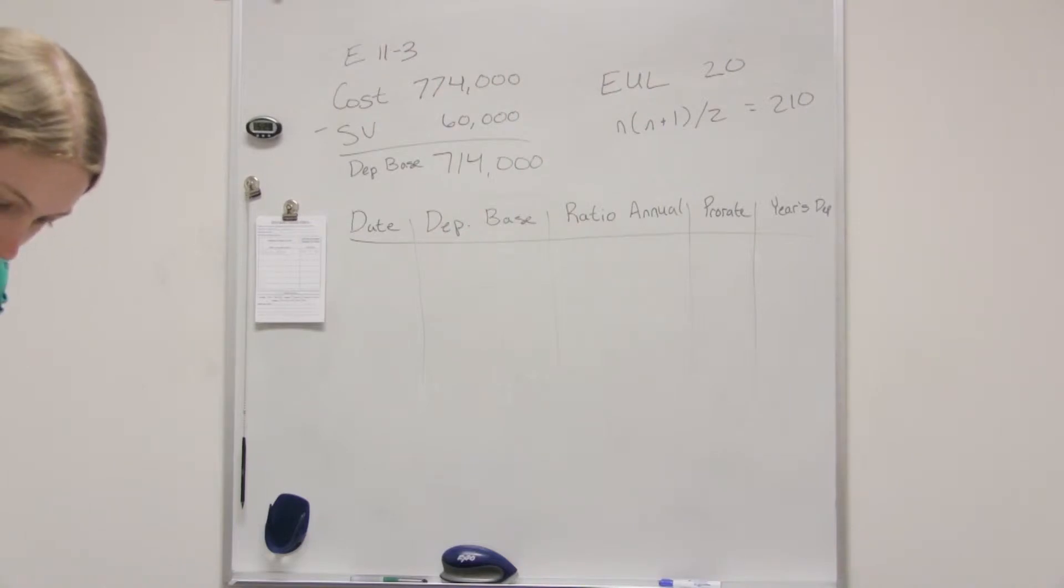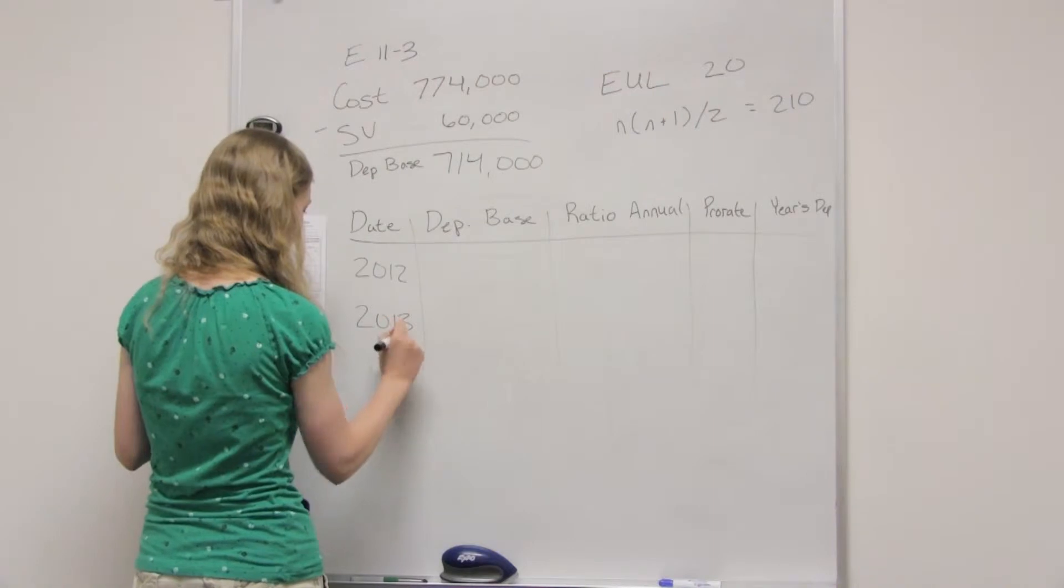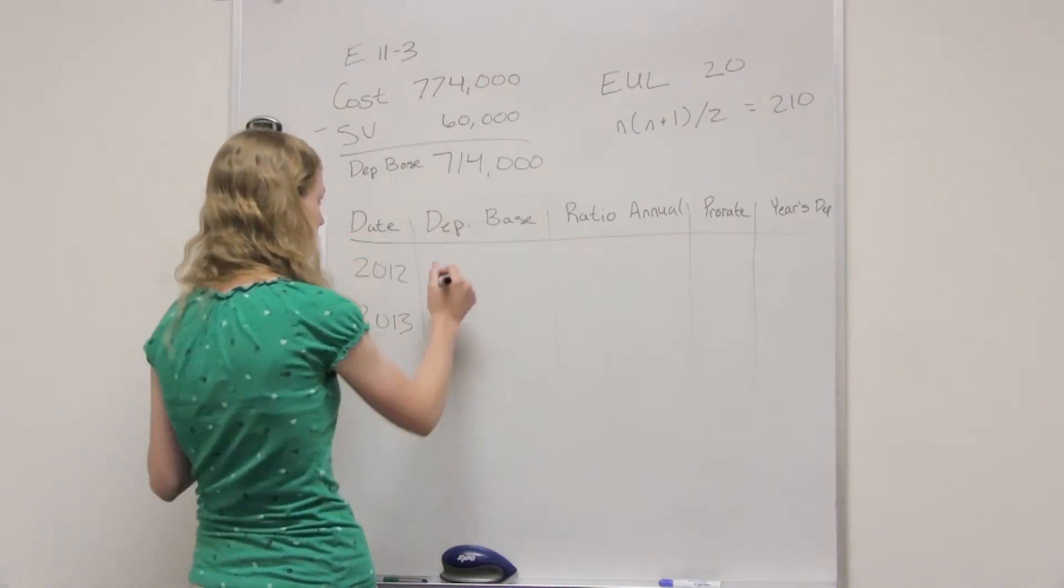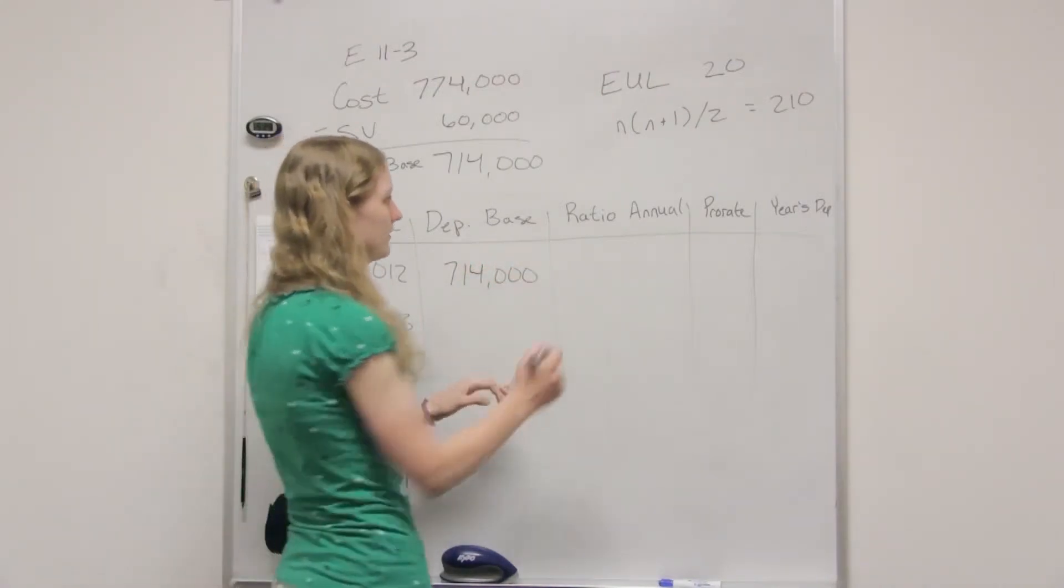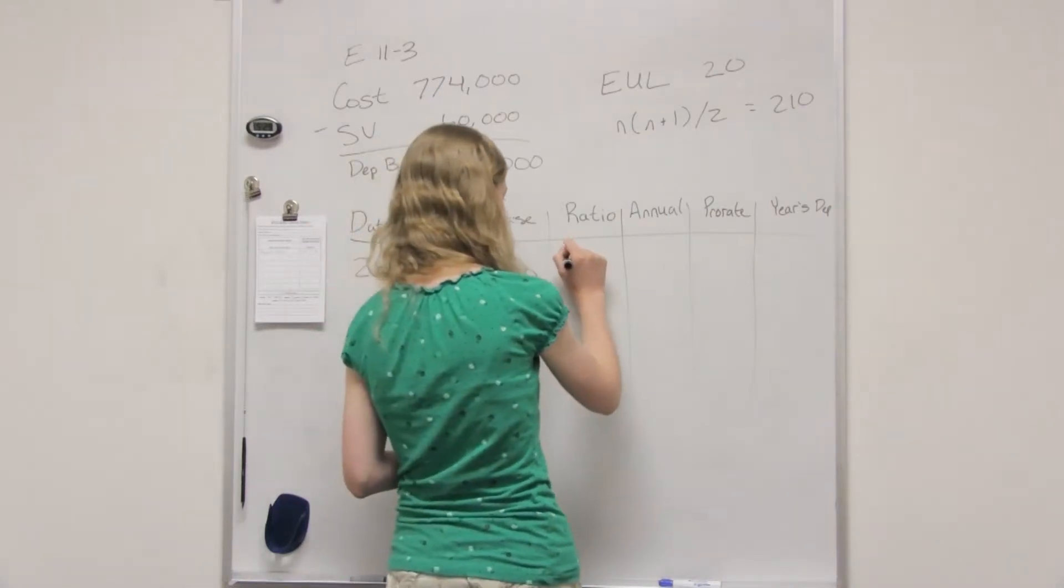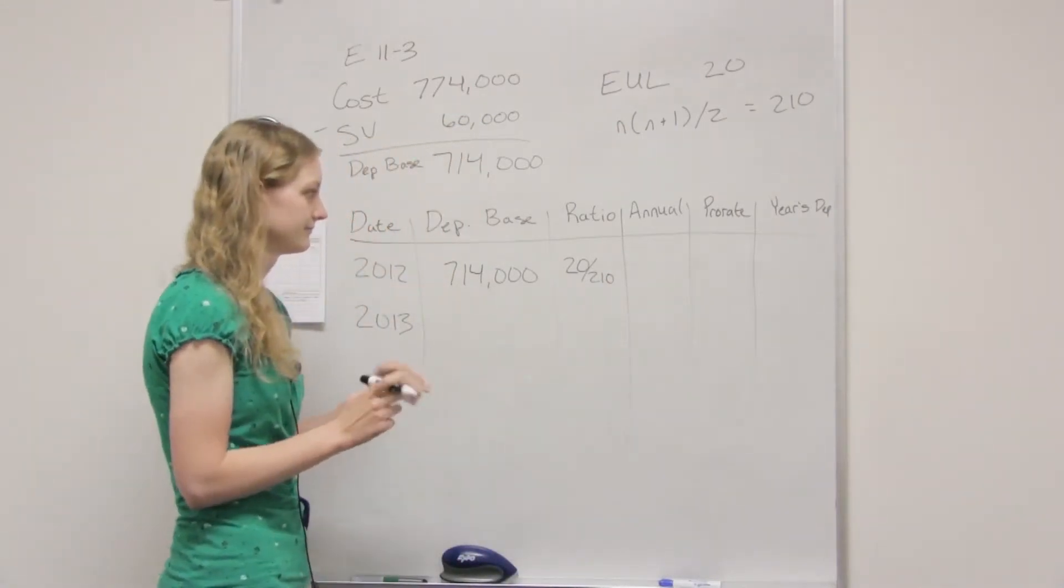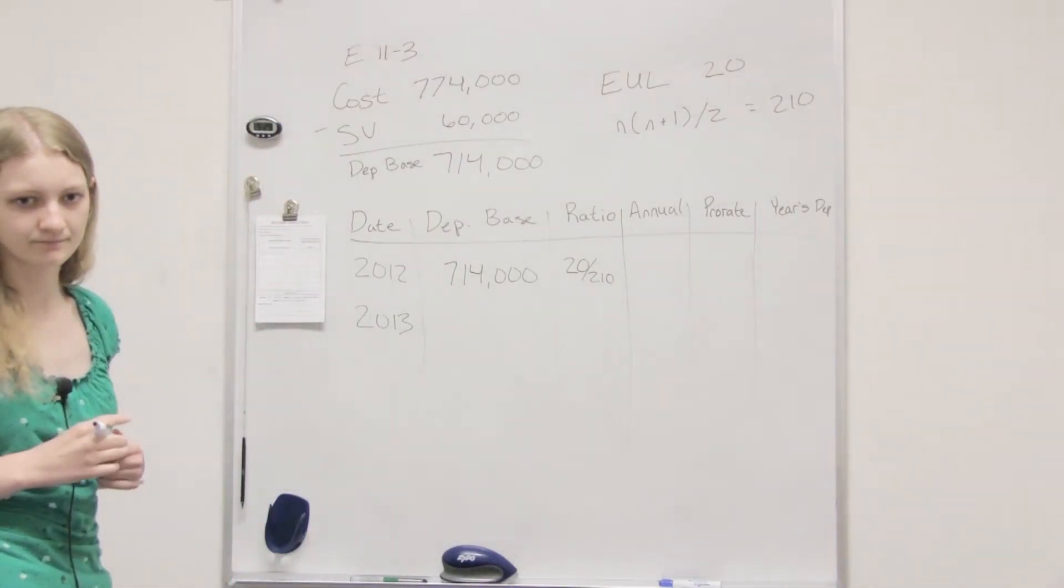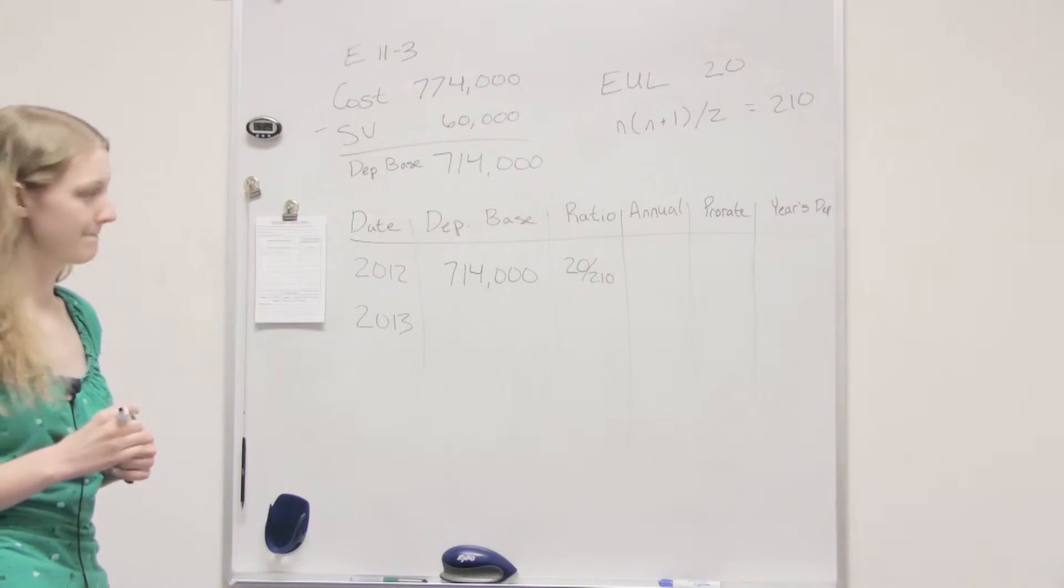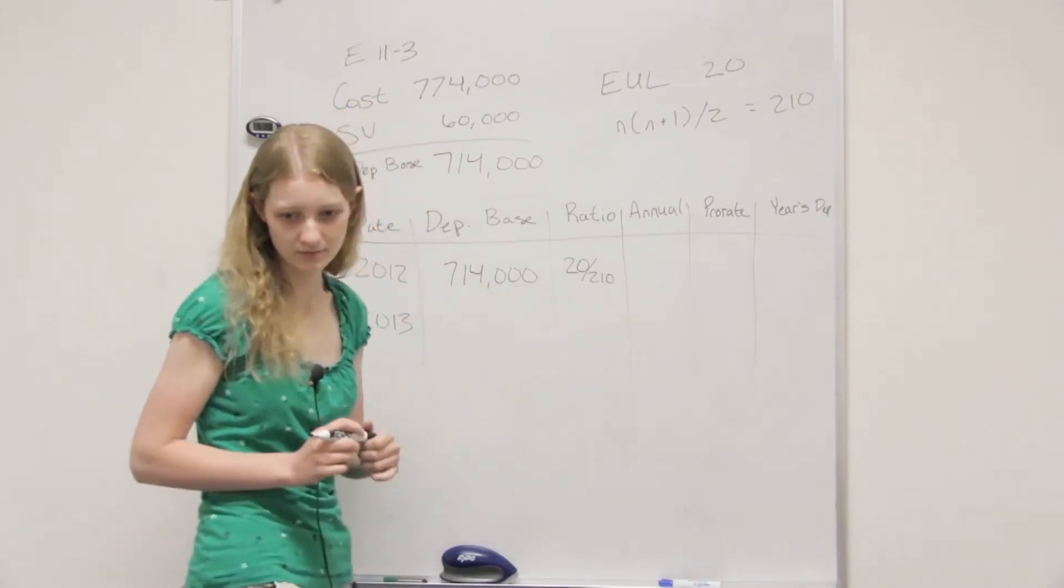So this is for I guess 2012. So our depreciable base is just going to be 714, and that's not going to change. And then our ratio for this first year is going to be 20 divided by the 210. Wait a second. Okay. Then we're going to multiply those together to get our annual depreciation.